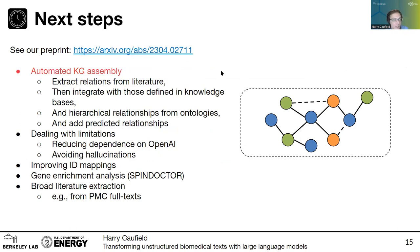We do have a preprint out on this with a description of the SPIRES method. Next steps are to essentially automate the process of knowledge graph assembly — extracting relations directly from the literature, integrating them with those defined in other knowledge bases and ontologies, and using those to identify predictive relationships. This is great because you get the best of both worlds: the noisier relationships found in biological and biomedical text, along with the very structured relationships and curation from knowledge bases and ontologies, and you can learn from both.